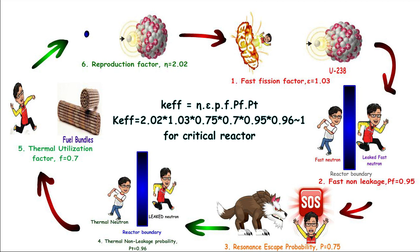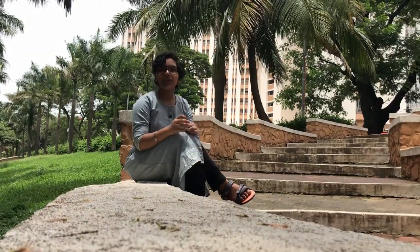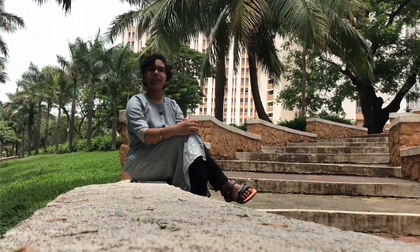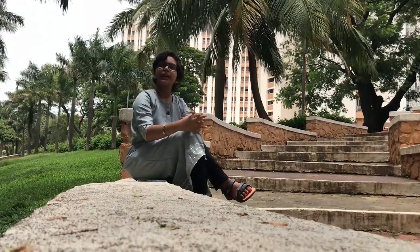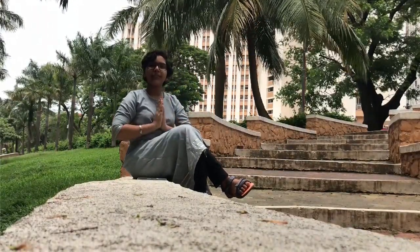Multiplying the six factors together, we get the value of k-effective. Time for you to rewind the video and grasp the concept and be a good neutron. Namaste from India.